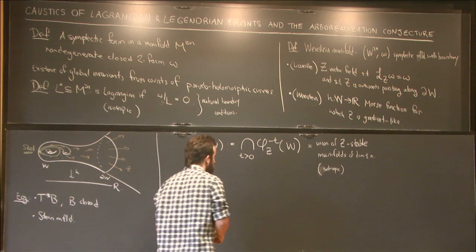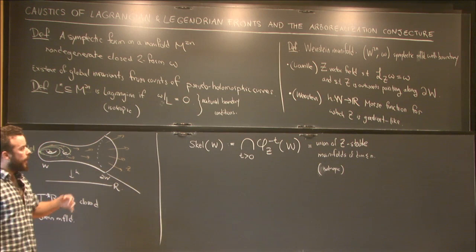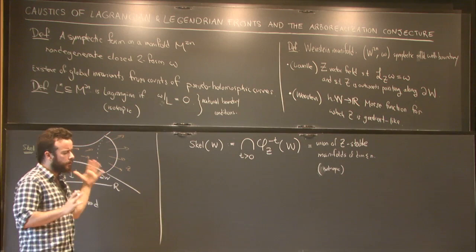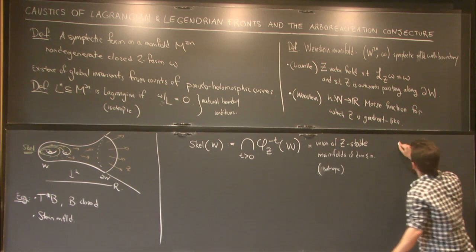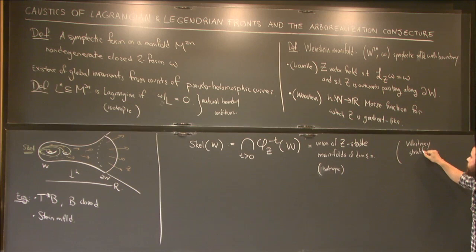And under reasonable conditions, for instance if H is Morse-Smale, and then Z is actually gradient with respect to some Euclidean structure near there, under some mild conditions, it's actually Whitney stratified. So let me just say that. It's a nice stratified set, Whitney stratified under mild conditions.